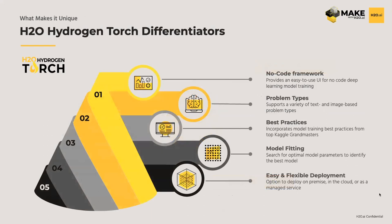What's really different about Hydrogen Torch? Number one, the no-code framework lets you build highly accurate, robust deep learning models without writing a line of code. Best practices from what our Kaggle Grandmasters have learned working on these types of problems for many years are built directly into those problem types. We also enable customers to iterate and still control elements of the experiment to ensure they're getting the right results and can tune models. And it's very easy and flexible to deploy — which is common across all of our products.